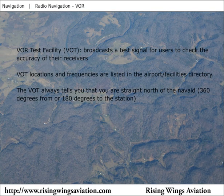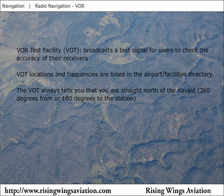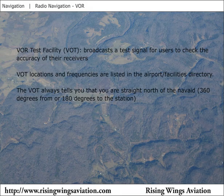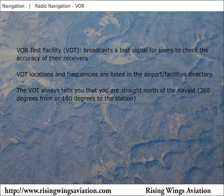A VOR test facility broadcasts test signals to permit pilots to check the accuracy of their aircraft's VOR receiver. VOT locations and frequencies are listed in the airport facilities directory. To use a VOT, simply tune its frequency. The VOT does not broadcast a signal usable for navigation; instead, it broadcasts a test signal which tells your aircraft it is directly north of the VOT station, regardless of its actual position. This means your onboard VOR will always indicate 0 degrees from or 180 degrees to when the CDI is centered.